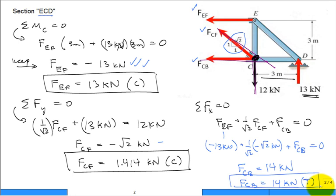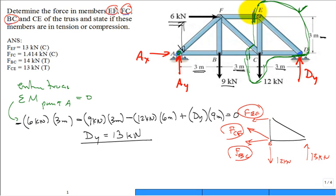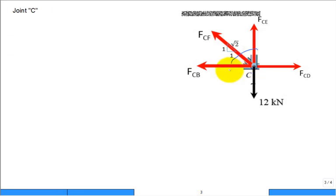I have one more unknown to solve for: the force in member C to E. We can't cut through it as part of this same section without cutting it twice, which doesn't work. So instead, we isolate joint C and use the method of joints to find F_CE.